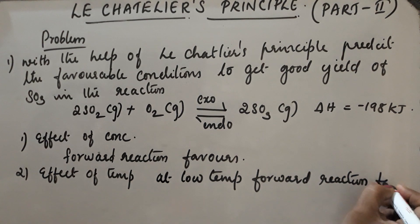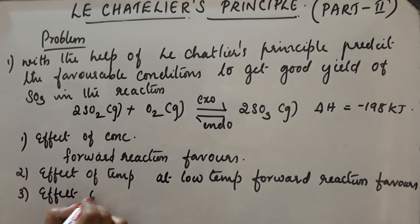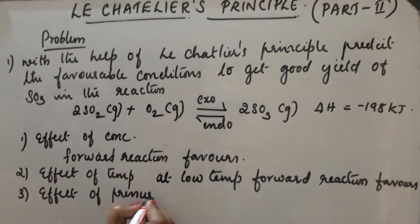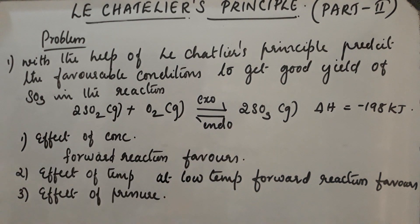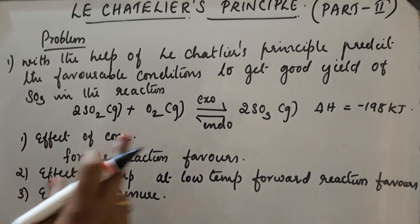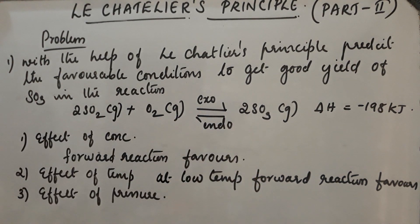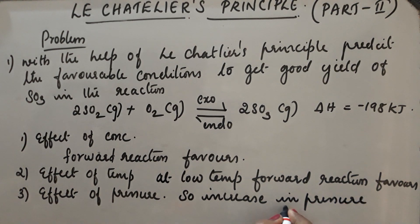Next case — effect of pressure. We consider the number of moles: on the reactant side it is 3 (2SO₂ + O₂), and on the product side it is 2 (2SO₃). If we increase the pressure, the reaction will proceed in the direction where the number of moles is less. So increase in pressure favors the forward reaction to get better yield.